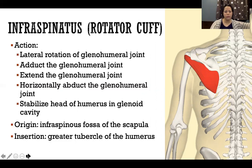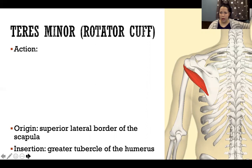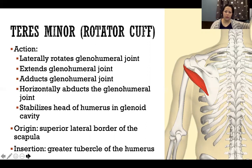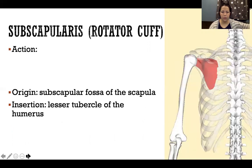Teres minor is just inferior to infraspinatus. It has essentially the same line of pull and the same insertion. The only difference between infraspinatus and teres minor is the origin, but the origins are right next to each other. Because they start from roughly the same place going to the same insertion, teres minor has the same list of actions as infraspinatus.